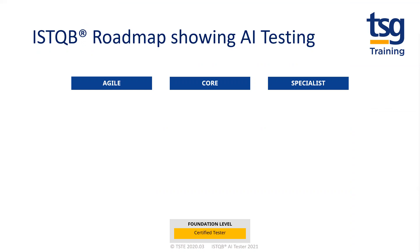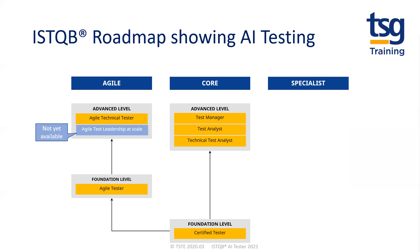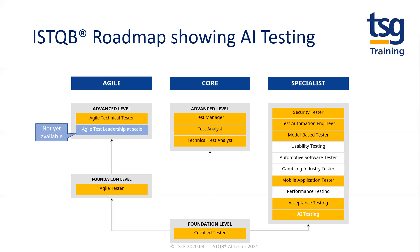Here's the ISTQB roadmap. The courses highlighted in orange are other courses that might interest you, provided by TSG Training. Initially, the focus after the foundation level certified tester course was the original core advanced level courses: the test manager course, focusing on skills and knowledge needed by test managers and test leads; the test analysis course, focusing on business and functional testers; and the technical test analyst course, focusing on technical testers and test engineers. Then the agile stream — with the newly available agile technical tester — and the specialist stream were developed. Many testers have sat some of these courses, particularly the test automation engineer and the mobile application tester.